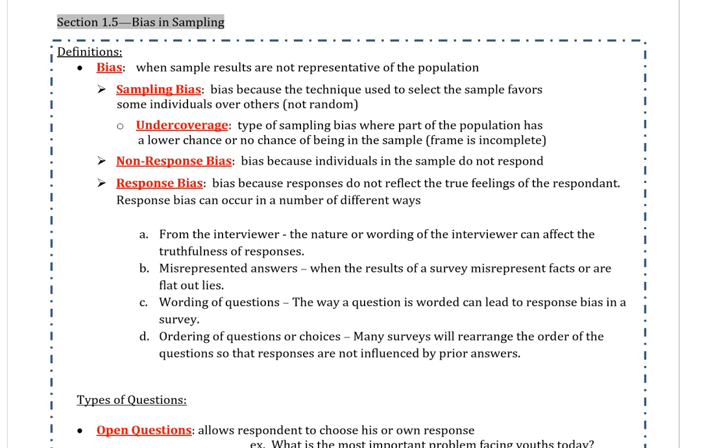The most common form of bias is sampling bias. Sampling bias is bias because the technique used to select a sample favors some individuals over others, i.e. not random. Specifically, that means not a simple random sample. Therefore, just about all sampling methods except for simple random samples have sampling bias.